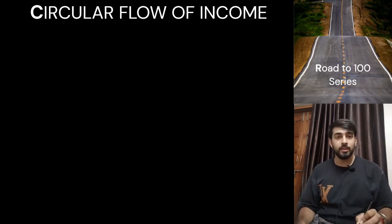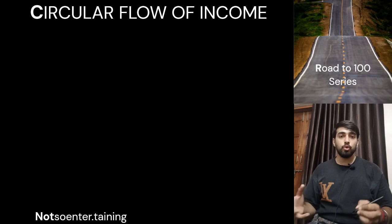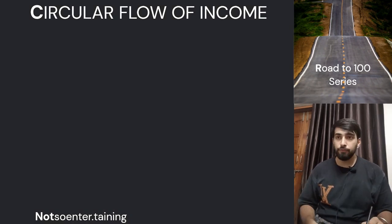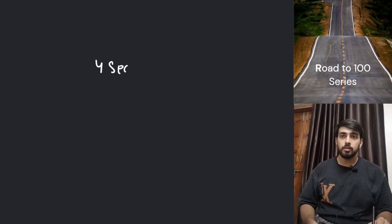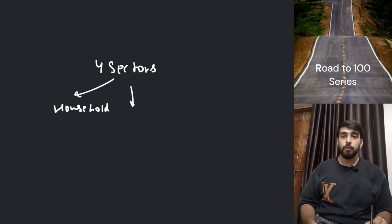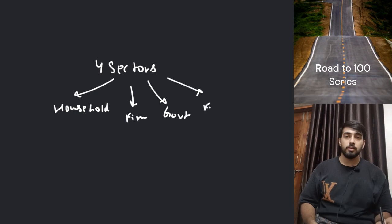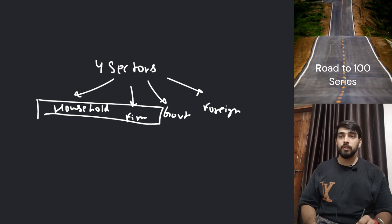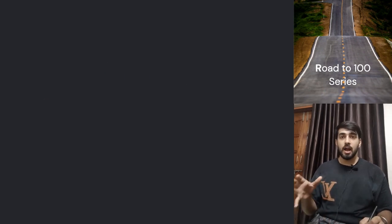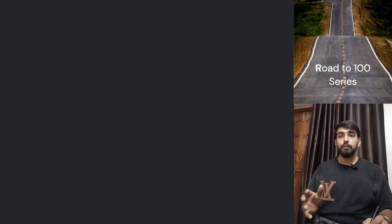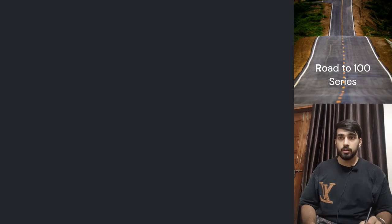Hey viewers, welcome back to another video of the 200 series for Class 12 Economics. In the previous section we started circular flow of income, in which we talked about two sectors: household and firm. In total there are four sectors in the economy — household, firm, government, and foreign sector — but for now we only need to talk about household and firm, as these two are in the syllabus. In the previous video we talked about how income starts from the firm and goes to household, and then is received back by the firm in the form of consumption expenditure.